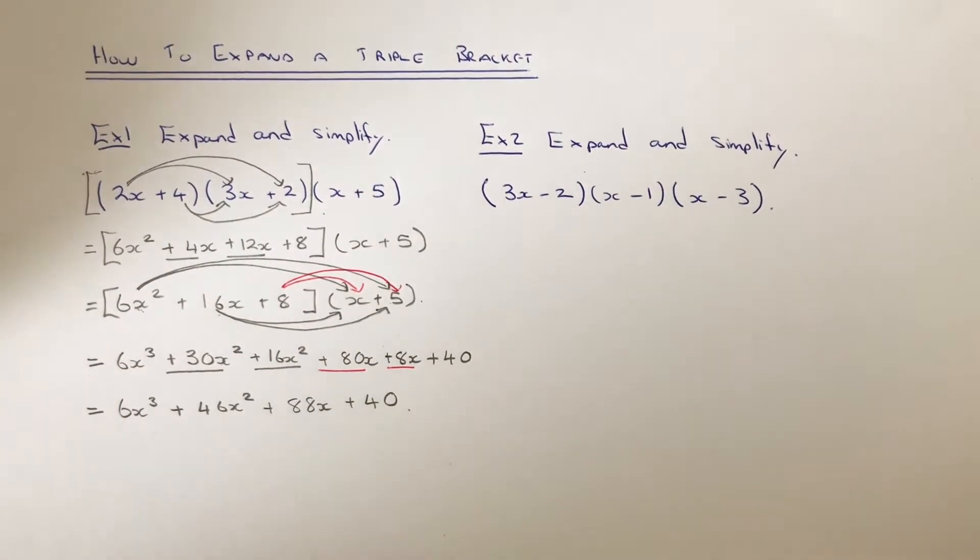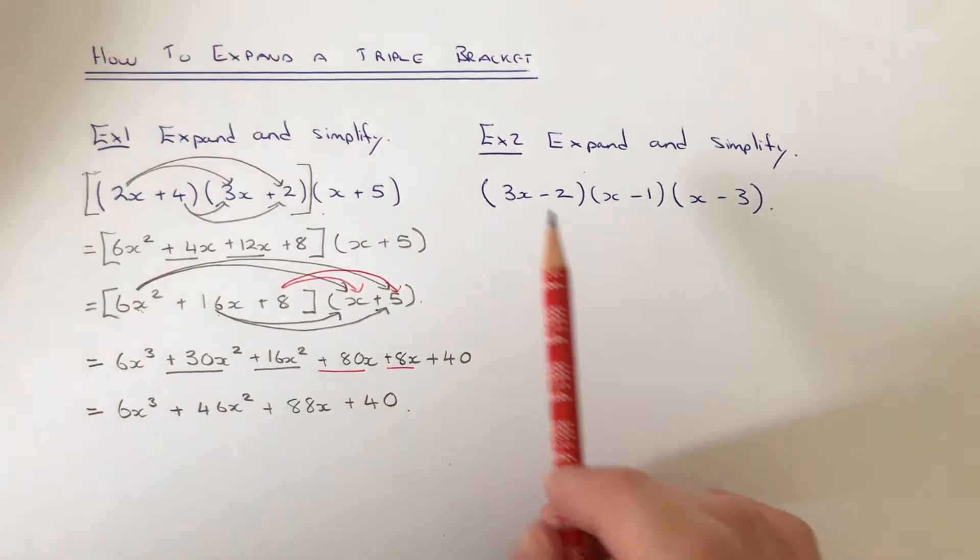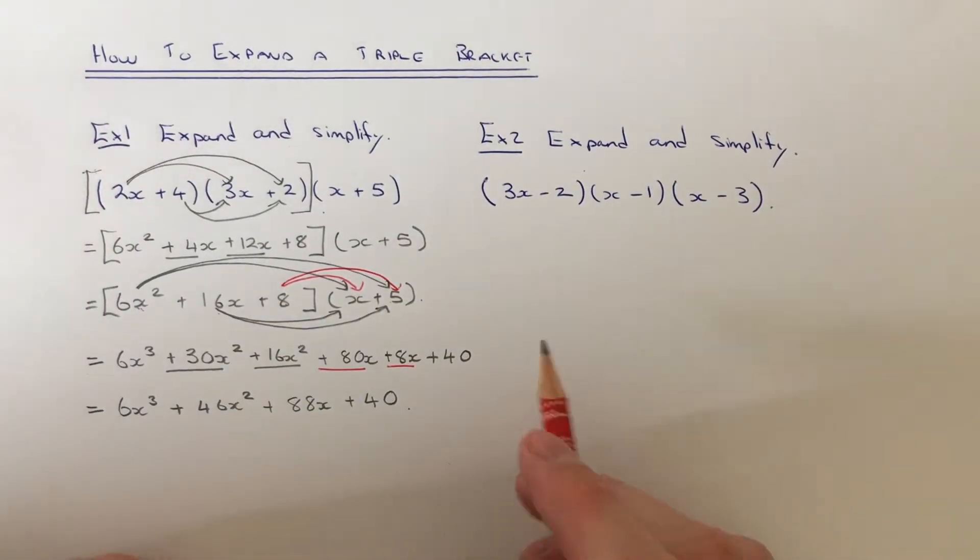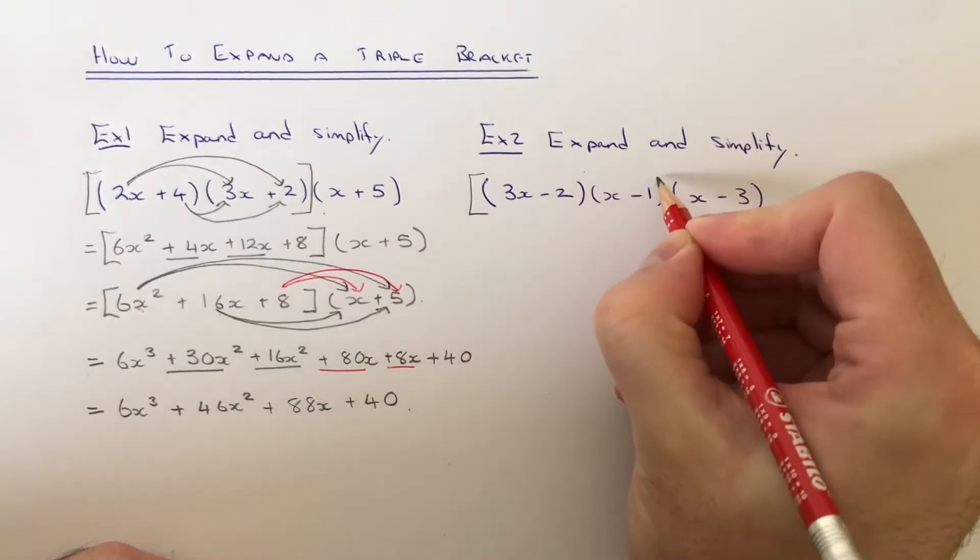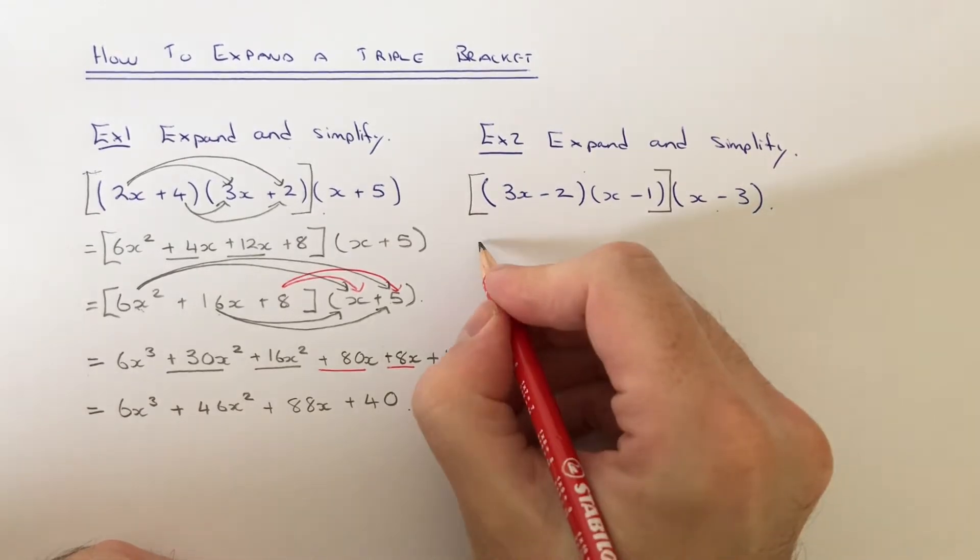So, let's do a slightly harder example. The second example, we've got a few more negative numbers here. So again, let's start with the double brackets first of all.